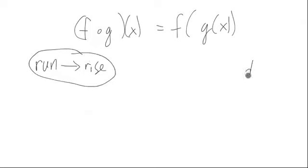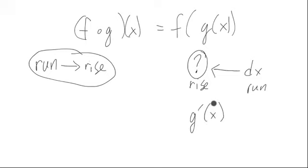So we start with an initial run, and we're going to input that run into g. What's going to be the rise that comes from g? We can compute that by taking the derivative as a number, which is the slope of the tangent line right at x, g prime of x.